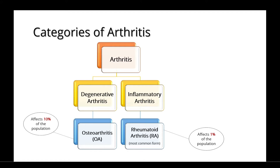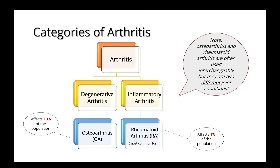Osteoarthritis is more prevalent, affecting about 10% of the population, whereas rheumatoid arthritis affects about 1% of the population. It's important to note that while osteoarthritis and rheumatoid arthritis are sometimes used interchangeably, they are two different joint conditions.